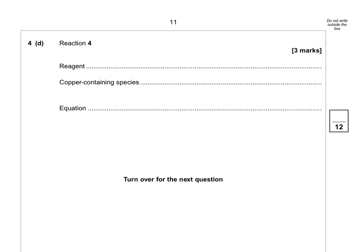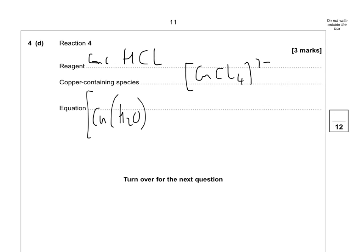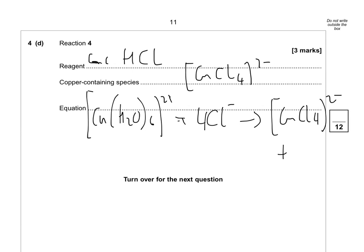Finally, reaction 4: the reagent is concentrated HCl. What you've made is [CuCl₄]²⁻. The equation is: [Cu(H₂O)₆]²⁺ + 4Cl⁻ → [CuCl₄]²⁻ + 6H₂O. The reason for the 2− charge is because each Cl has a 1− charge and copper is 2+, giving a net 2− charge.